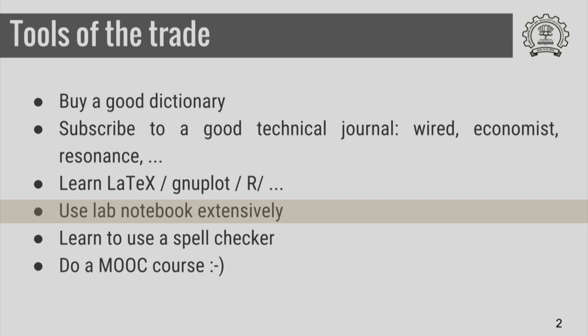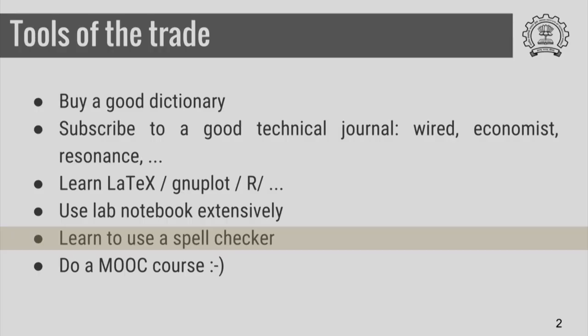Continuous technical writing without recourse to any other technical material is very essential for you to develop technical writing skills. You should also learn to use a spell checker.